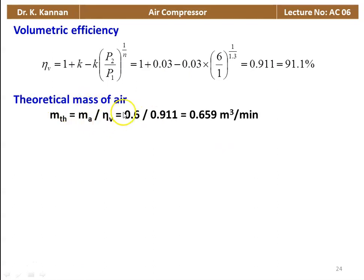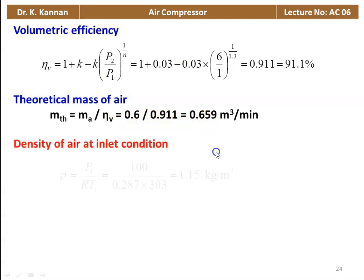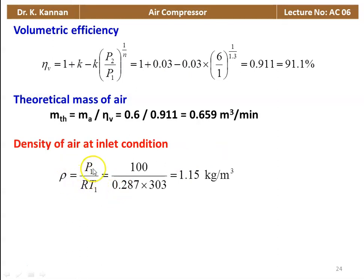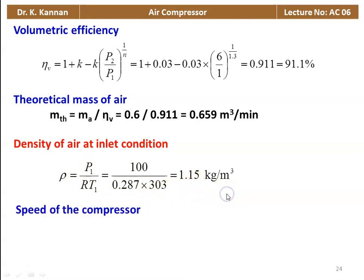Next we calculate the theoretical mass of air: actual mass divided by the volumetric efficiency, 0.6 divided by 0.911 equals 0.659 meter cube per minute. And the density of air at inlet condition: rho equal to P1 divided by R into T1. So 100 divided by 0.287 into 303 equals 1.15 kilogram per meter cube.